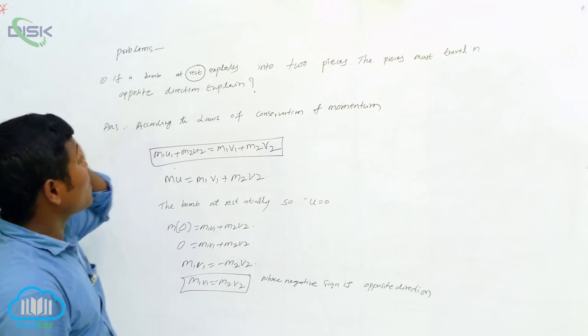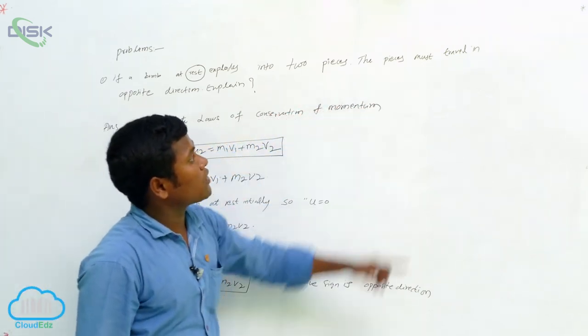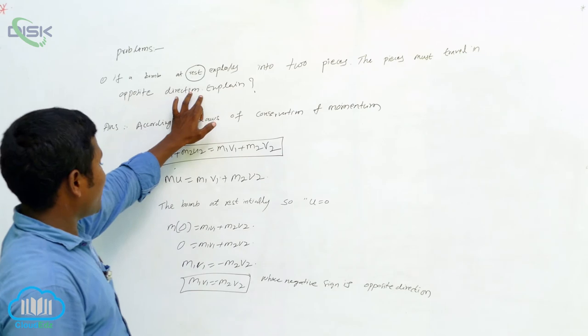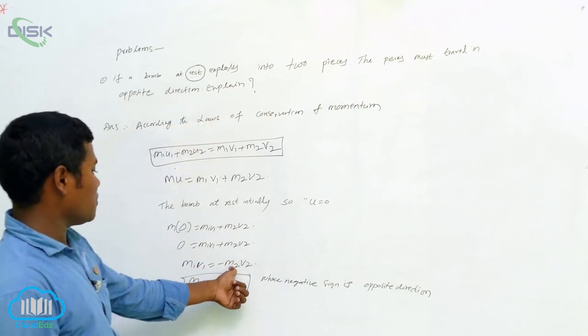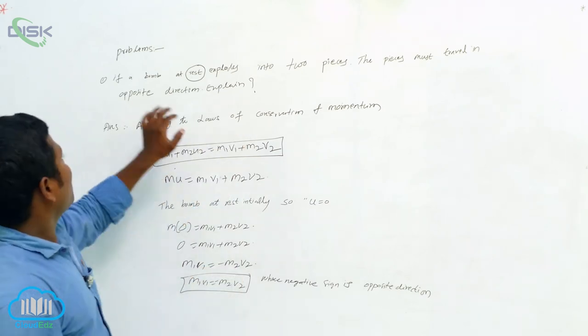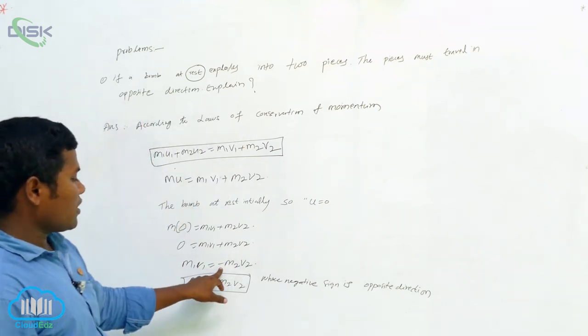What is the asking in the question? The two pieces must be traveling in opposite directions. See this M1V1, this is one piece. This is M2, another piece. In the question, what is that? Opposite. So you got the negative sign. Then what we can say?